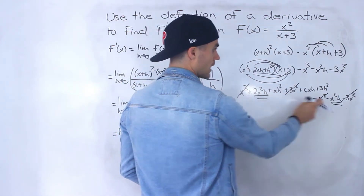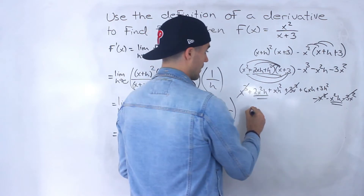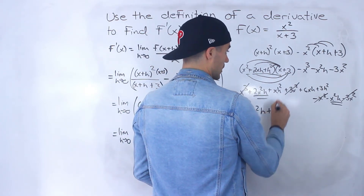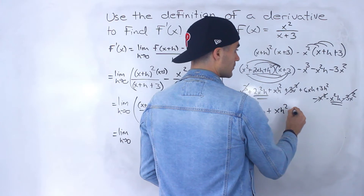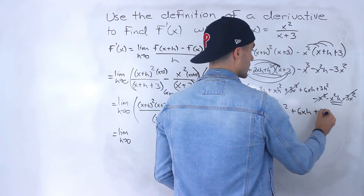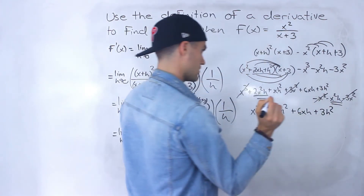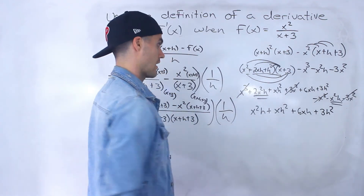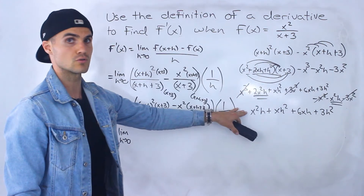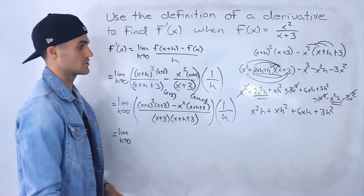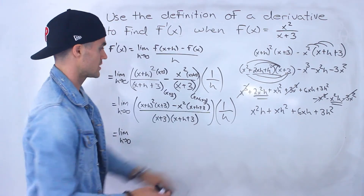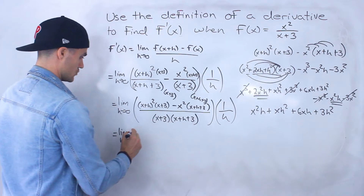So 2x squared h minus 1x squared h ends up being 1x squared h, and we're left with x squared h plus xh squared plus 6xh plus 3h squared. None of these are like terms, so this simplifies to that expression. I'm going to take this expression and write it for the numerator.